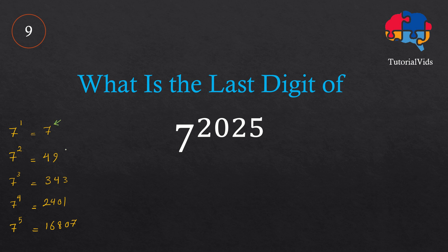The last digit is 7 first, then the last digit is 9, then 3, then 1, and again 7. If we calculate 7 to the power of 6, this gives us something where the last digit is 9. You can try that, but if we summarize this then we'll see that the last digit repeats.